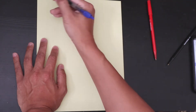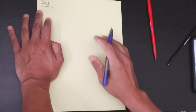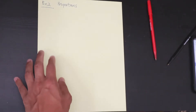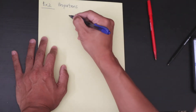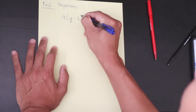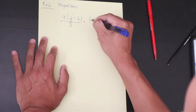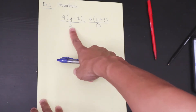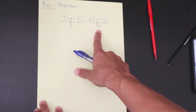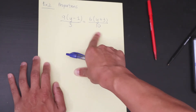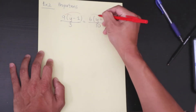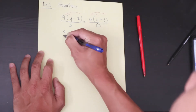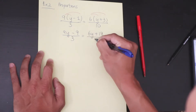Example 2 involves fractions — specifically, a proportion, meaning a fraction equals a fraction. The equation is: 9 multiplied by the quantity of y minus 1, all over 3, equals 6 multiplied by the quantity of y plus 3, all over 10. First, get rid of the parentheses by using distributive property on both sides. The left becomes 9y minus 9 over 3, and the right becomes 6y plus 18 over 10.